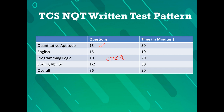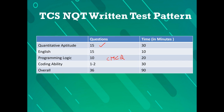In the TCS NQT, quantitative aptitude has 15 questions to be completed in 30 minutes. Verbal has 15 questions in 10 minutes. Programming logic has 10 questions in 20 minutes. The coding ability section has one to two problems to be completed in 30 minutes. Overall it is 36 questions in 90 minutes. We will also compare the difficulty level of each subsection — for example, what level of quants and which chapters I need to prepare for TCS, and similarly for verbal.